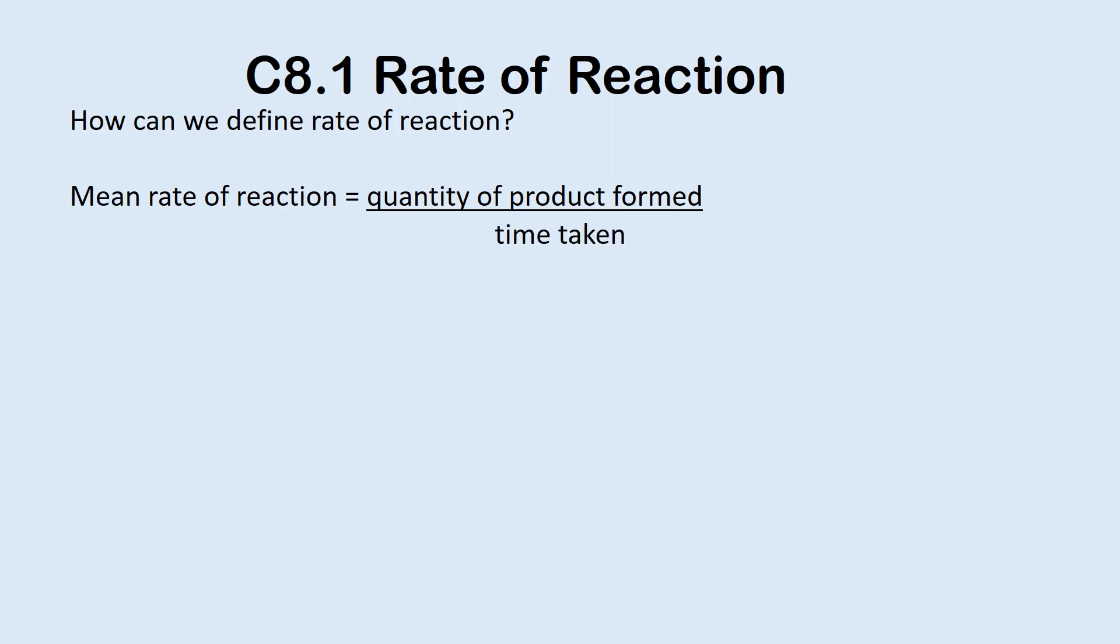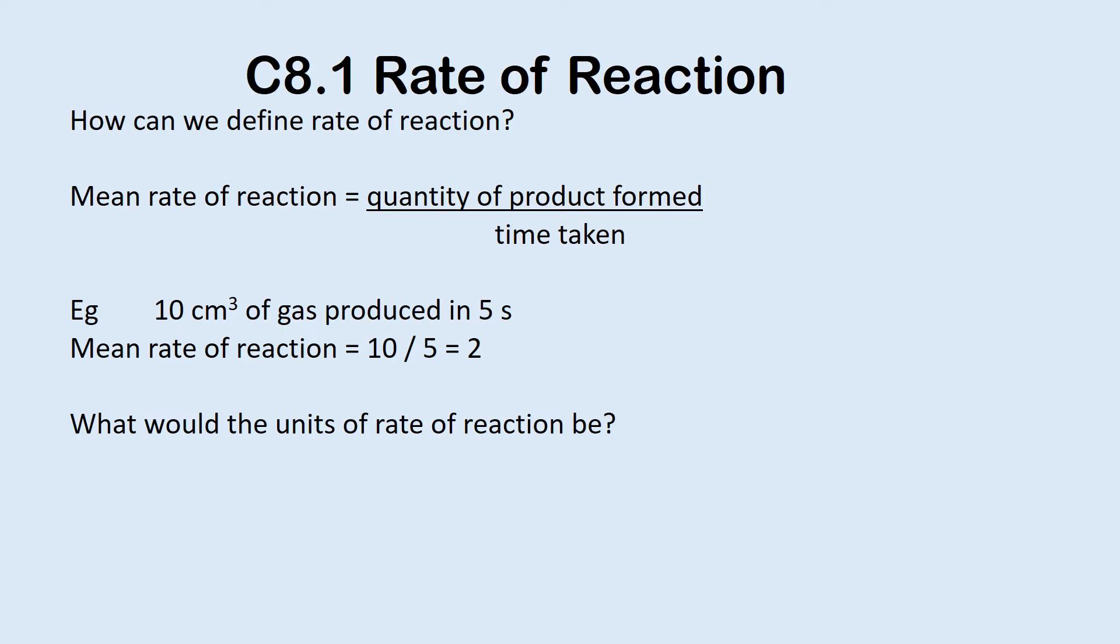First thing we should probably define what rate of reaction actually is. Rate is the speed of something. The mean rate of reaction equals the quantity of product formed, so the amount of product formed in a reaction, divided by time. Rates are always a quantity divided by time. For example, if you had 10 centimeters cubed of gas produced in a reaction and that was produced in five seconds, the rate would simply be quantity of product, so 10, divided by time taken, 5, giving you a rate of 2. That would need a unit. The units would be centimeters cubed per second.